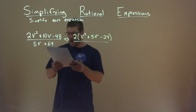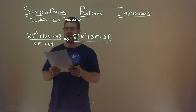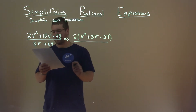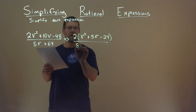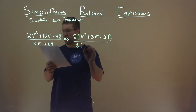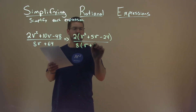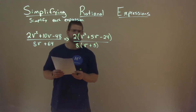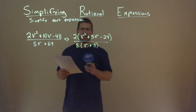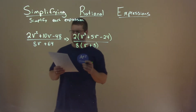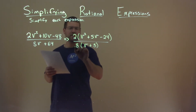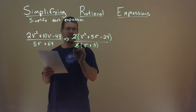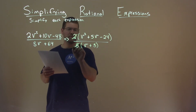The denominator — I can pull out an 8, I see that in both parts. So if I pull out an 8, I'm left with v plus 8 in the denominator. Quick simplification: 2 and 8 — you eliminate that 2, and 8 divided by 2 is a 4.